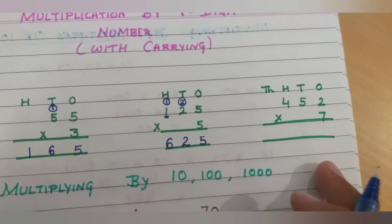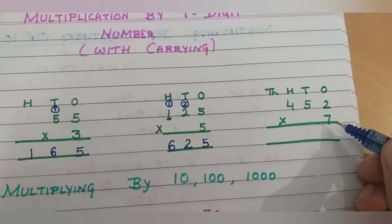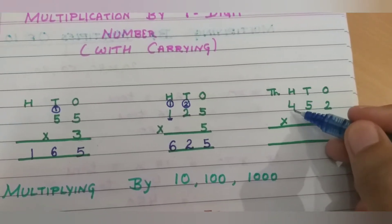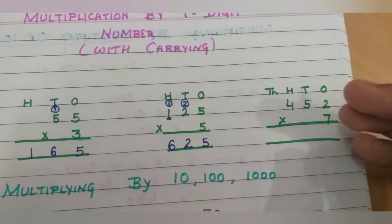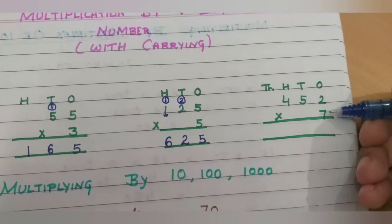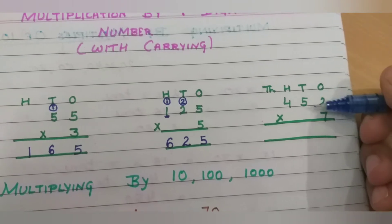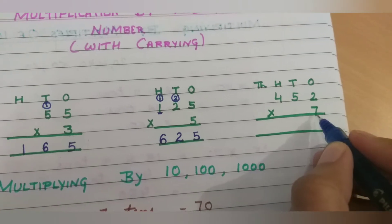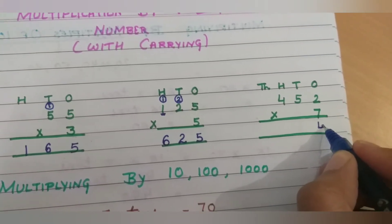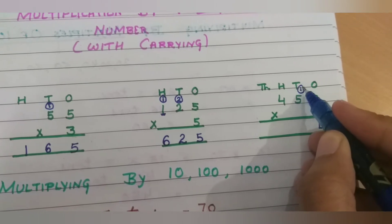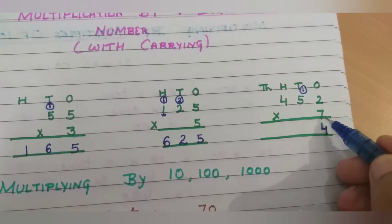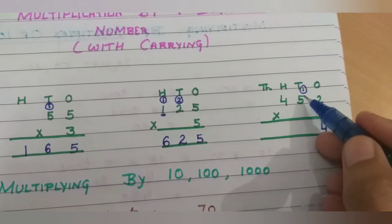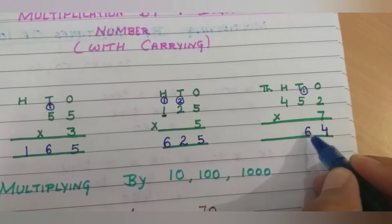Let's move on to the next example. Here we have at the ones place two, tens place five, and hundredths place four. Again we will follow the same steps: first multiply the ones, then tens, then hundreds. Seven twos are fourteen — write four and one will be carry. Then we multiply with tens: seven fives are thirty-five, thirty-five plus one is thirty-six, so three will be carry.